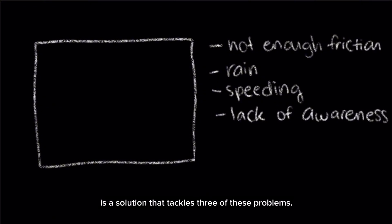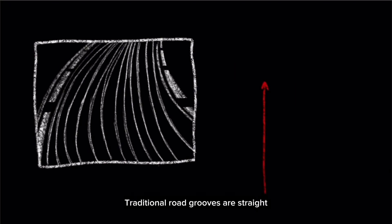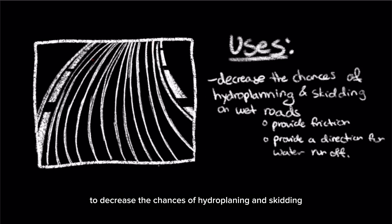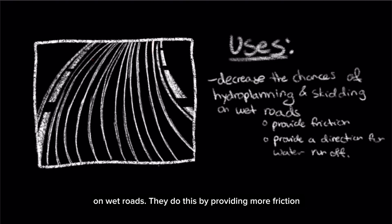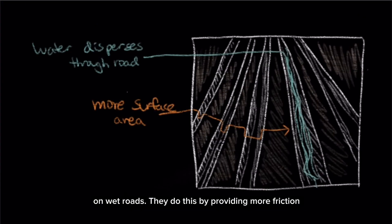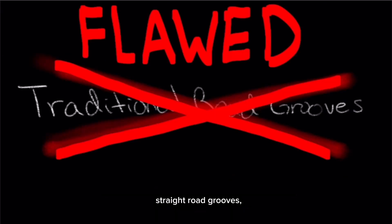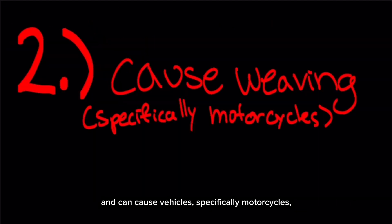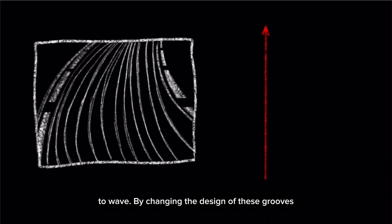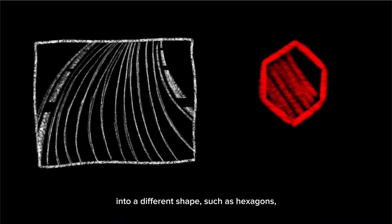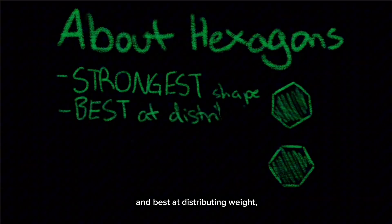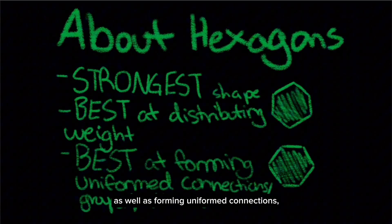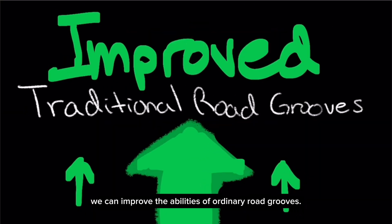Currently, there already is a solution that tackles three of these problems: road grooves. Traditional road grooves are straight and run along the direction of the road to decrease the chances of hydroplaning and skidding on wet roads. They do this by providing more friction and surface area for the water to disperse across. However, there are a couple of flaws — they only disperse water in one direction and can cause vehicles, specifically motorcycles, to weave. By changing the design of these grooves into a different shape, such as hexagons — the strongest shapes and best at distributing weight — as well as forming uniform connections, we can improve the abilities of ordinary road grooves.